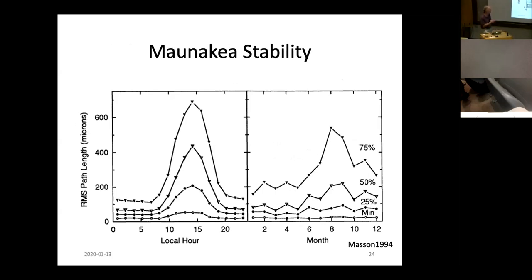Mauna Kea, the stability, has a diurnal and seasonal variation. This is the time of day. And you see in the afternoon, this is the path length fluctuations. They increase tremendously in the afternoon, which is another reason we observe at night rather than the afternoon where the turbulence is worse.